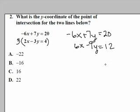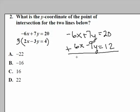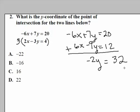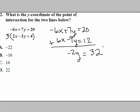The second equation becomes 6x minus 9y equals 12. When doing elimination, you simply add the two equations together, and a variable will eliminate. The x variables eliminate when I add straight down, giving me negative 2y equals 32. You should be able to finish from there — only find the y-coordinate.